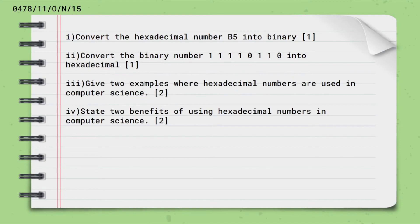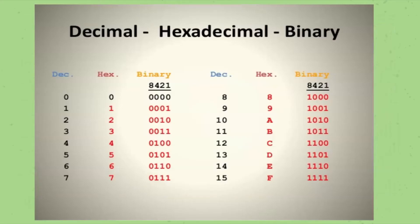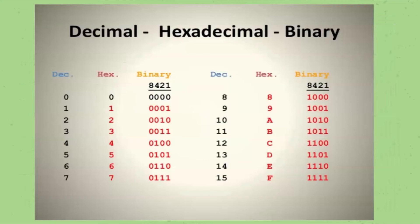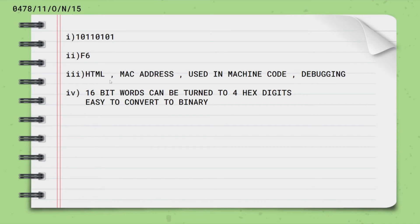Converting B5 into binary. As you know, B means 11. So 11 can be written as 8 plus 2 plus 1. So place the ones on the numbers used. That is 8, 2 and 1. So that becomes 1011. The next number is 5. 5 can be written as 4 and 1. So place the ones on the numbers used. So it is 0101. Now combine these 8 digits. It can be written as 10110101.